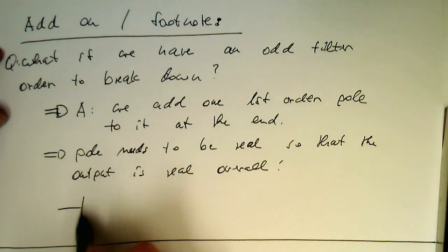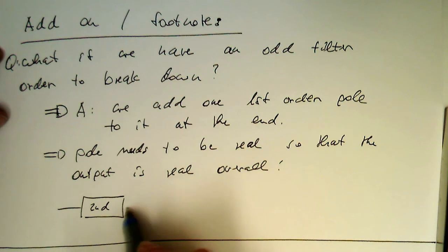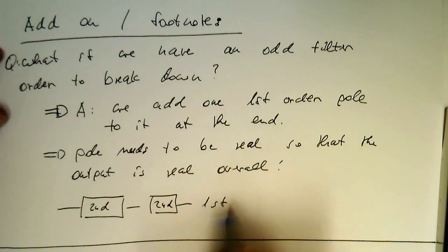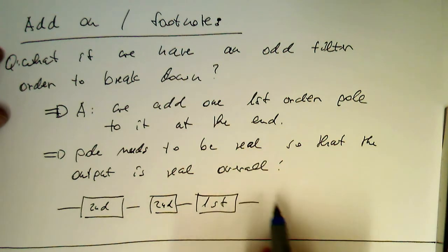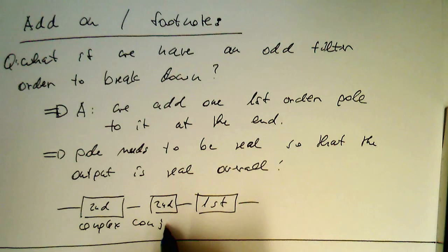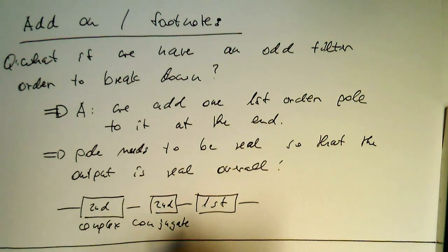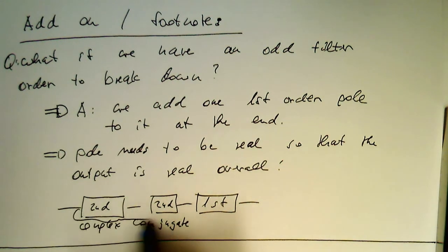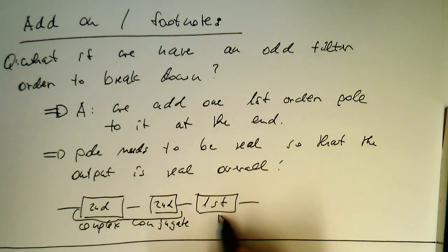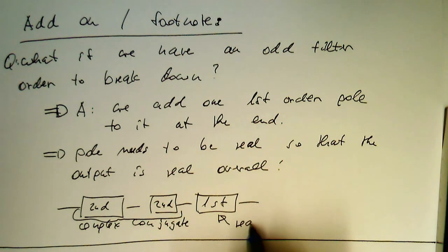So, this means that we have got our second-order, and then we have a first-order filter at the output. So that's complex conjugate, these two here. Then this one, the last one here, has a real pole.